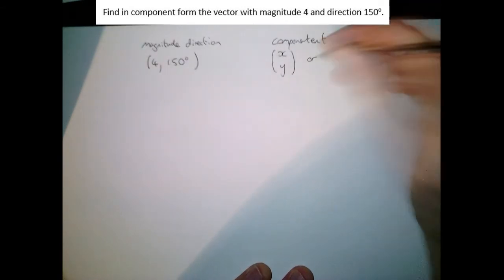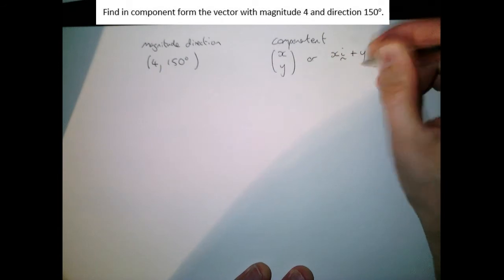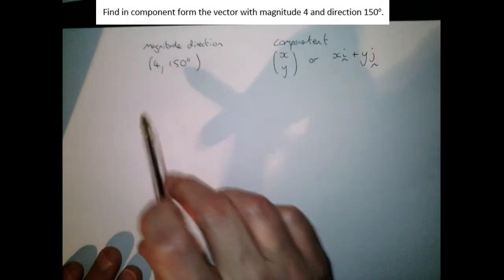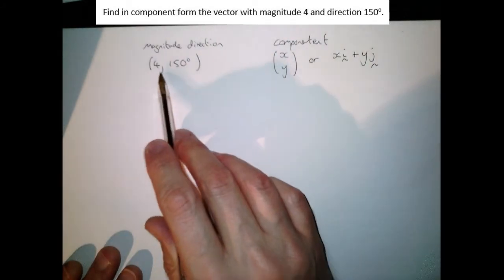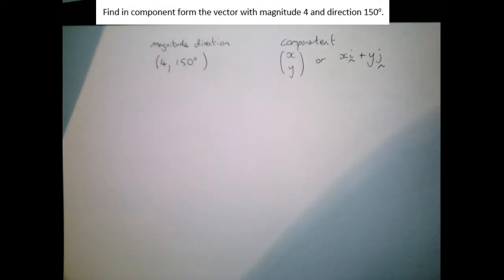Or we mean writing x i plus y j, so write it in i,j format. What we want to do is to turn this vector for magnitude-direction 150 degrees into this format, so that's what we're thinking about.